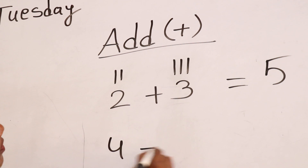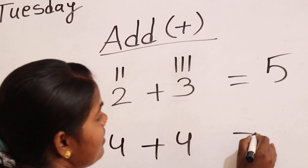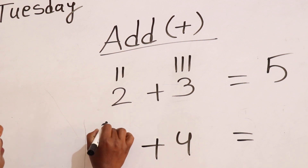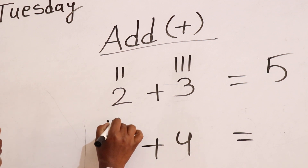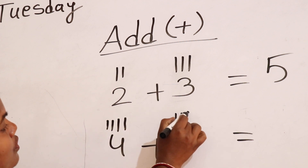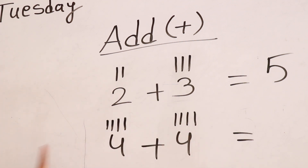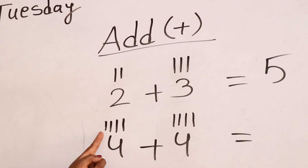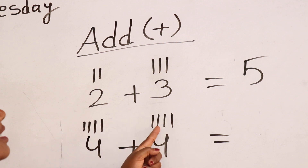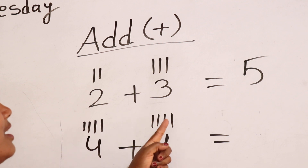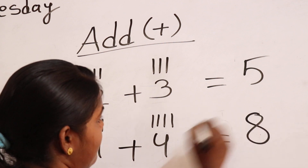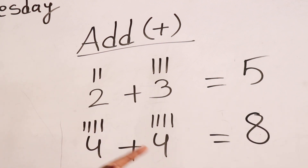4 plus 4. Draw 4 lines: 1, 2, 3, 4. Draw 4 more lines: 1, 2, 3, 4. Add all the lines: 1, 2, 3, 4, 5, 6, 7, 8. Answer is 8.